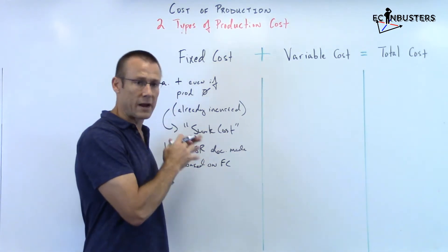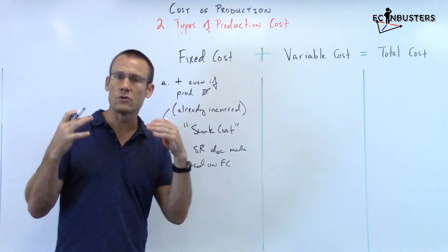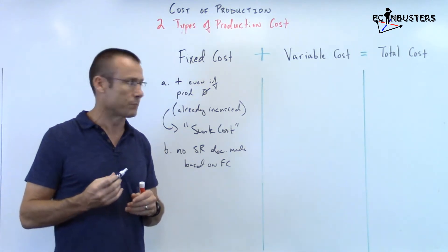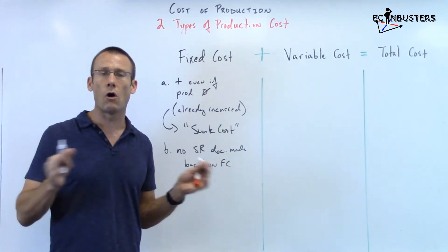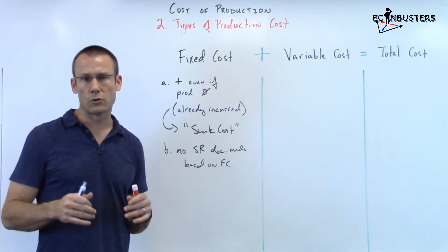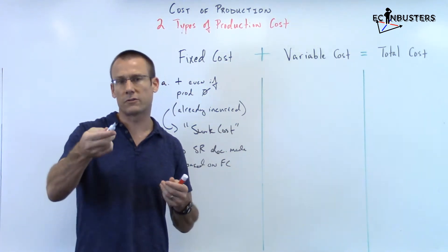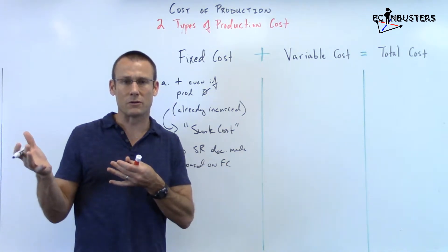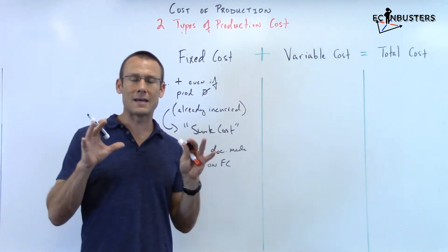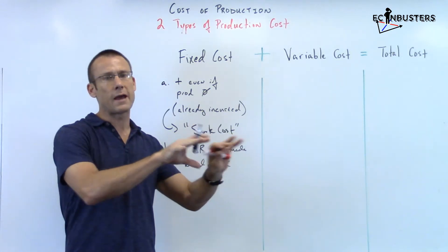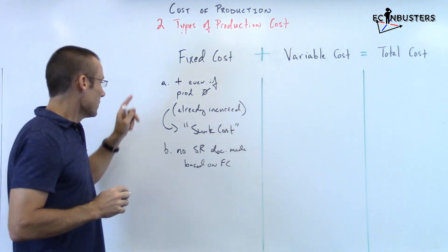I wanted you to see it happen organically — watch me write it so you can get each one down, because they're super important. This point is what we call the sunk cost bias, which people fall victim to all the time. It's basing decisions on costs that have already happened, and we should never do that. There's a saying: don't cry over spilled milk. If it's already happened, don't make present or forward decisions based on it.